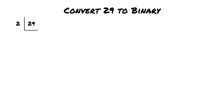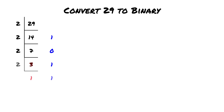Using the same method: 29 divided by 2 is 14 with a remainder of 1. 14 divided by 2 is 7 remainder 0. 7 divided by 2 is 3 remainder 1.